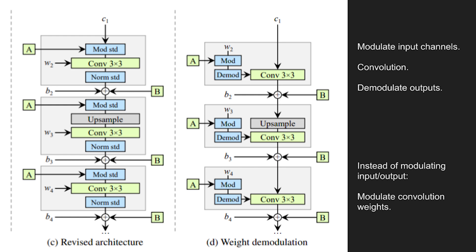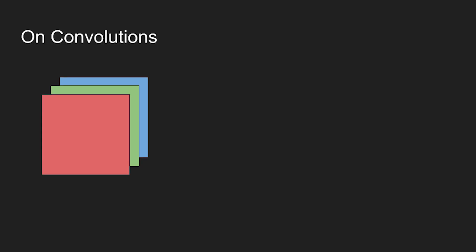Here I'll go into more detail about convolution modulation and demodulation. Here is an example of what a set of image feature maps might look like with three channels: red, green, and blue.